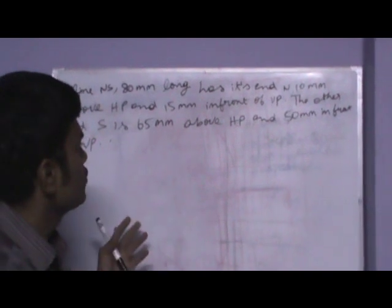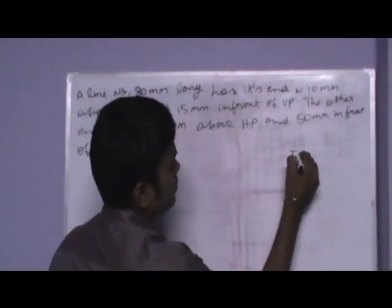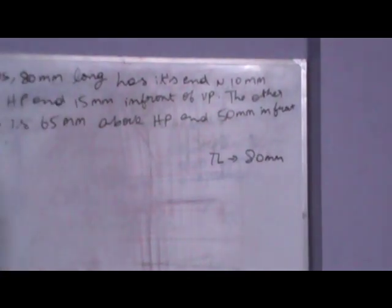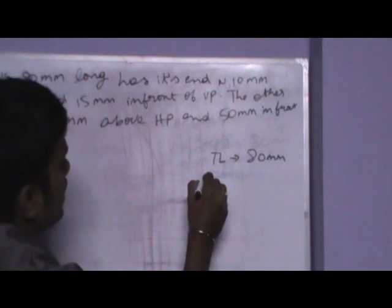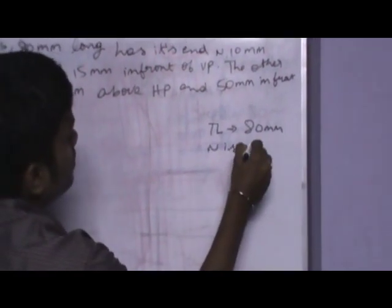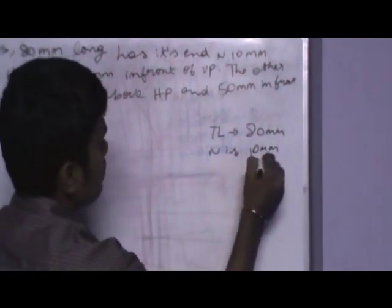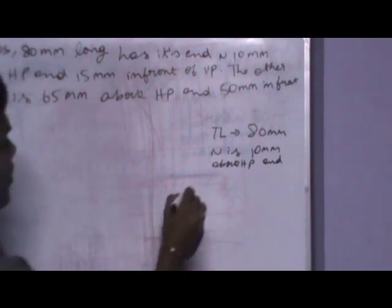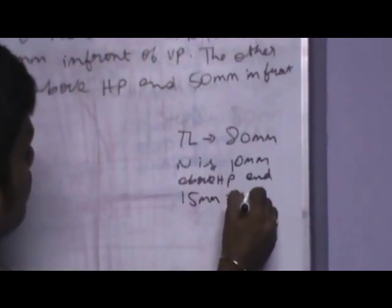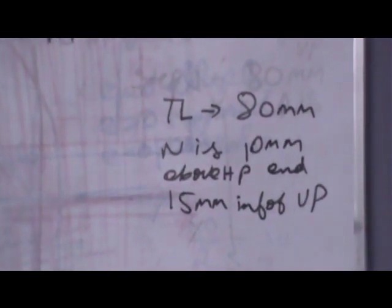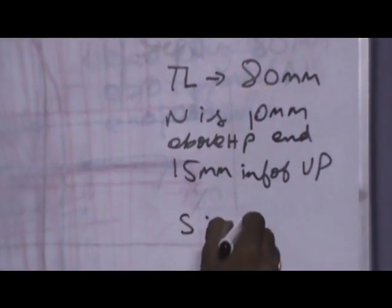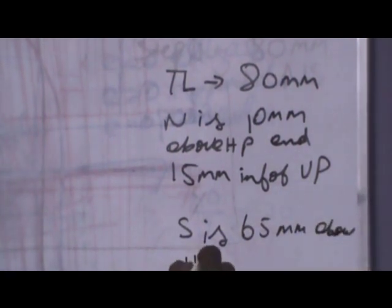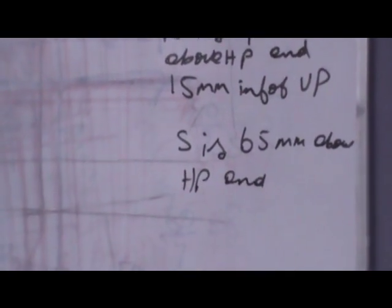Now let me take the short notes of the question. What is given is the true length, that is true length is 80mm, and one end of the line, that is N, is 10mm above HP and 15mm in front of VP. And the other end S is 65mm above HP and 50mm in front of VP.